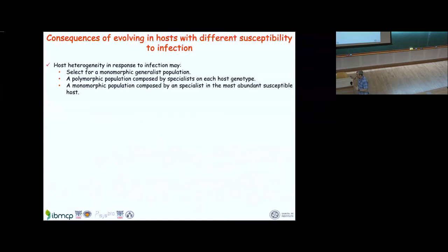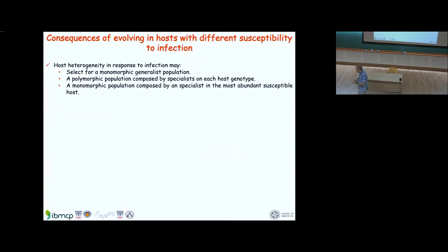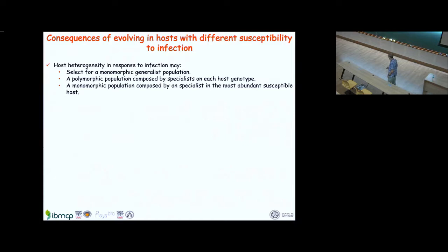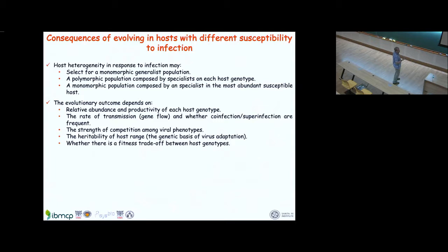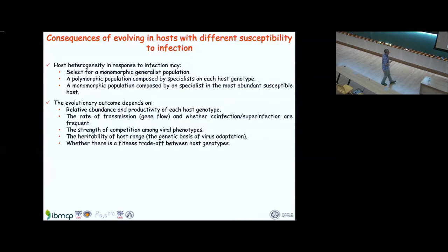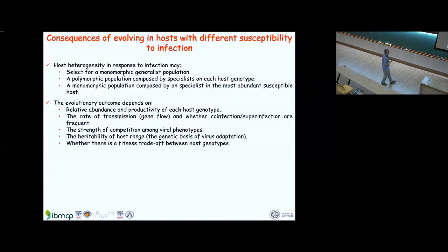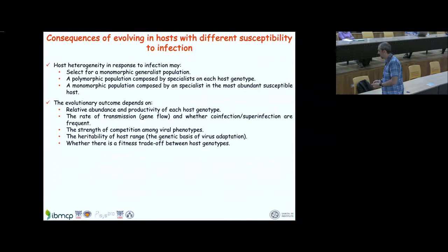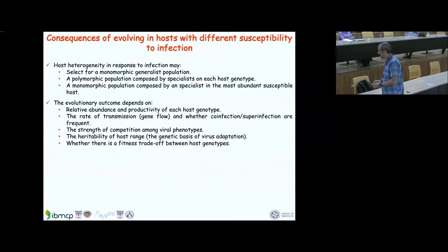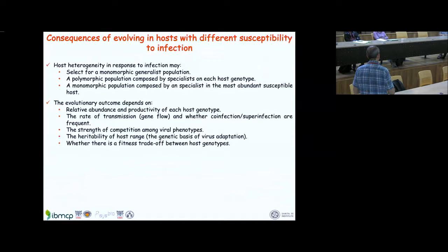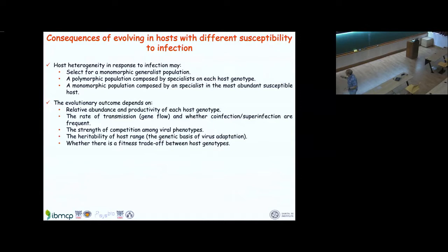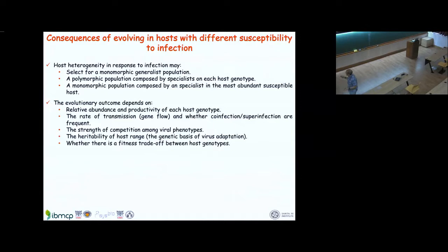The specialist-on-most-abundant-host situation is unstable: depending on the aggressiveness of the virus, that susceptible host genotype will disappear and resistant hosts will survive. Factors determining each evolutionary outcome include the relative abundance and productivity of each host genotype. If the most susceptible host is at high frequency, the virus spreads widely; if at low frequency, disease incidence remains low.